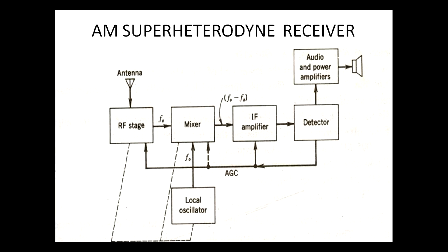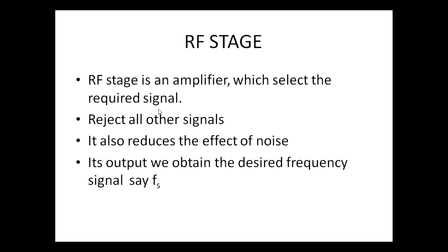The next stage of our superheterodyne receiver is the RF stage. The RF stage is basically an amplifier which selects the required signal and rejects all other signals. It also reduces the effect of noise. The selected signal is the required signal — say it is FS.